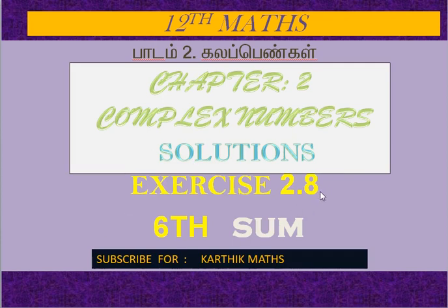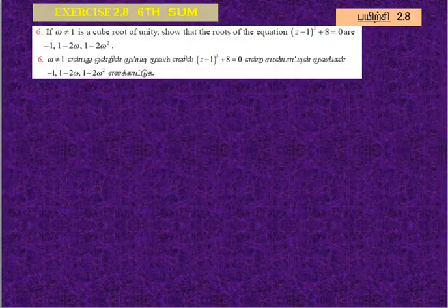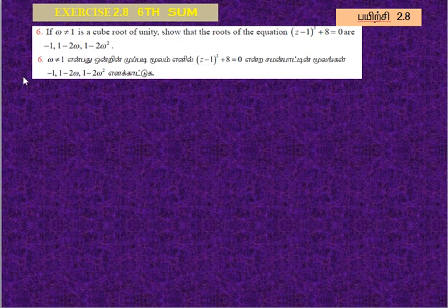Welcome. If omega naught equal to 1 is a cube root of unity, show that the roots of the equation (z minus 1) cubed plus 8 equal to 0. There are 3 solutions to get.